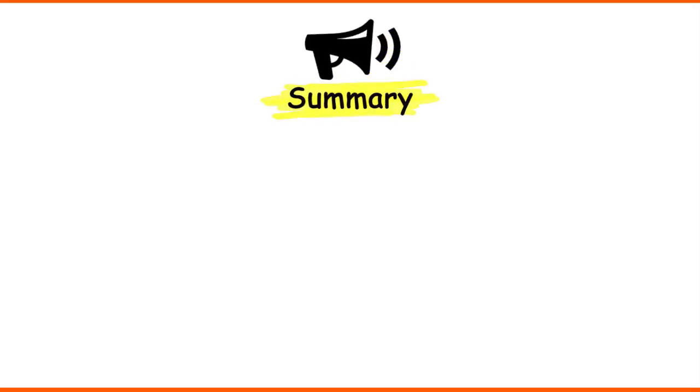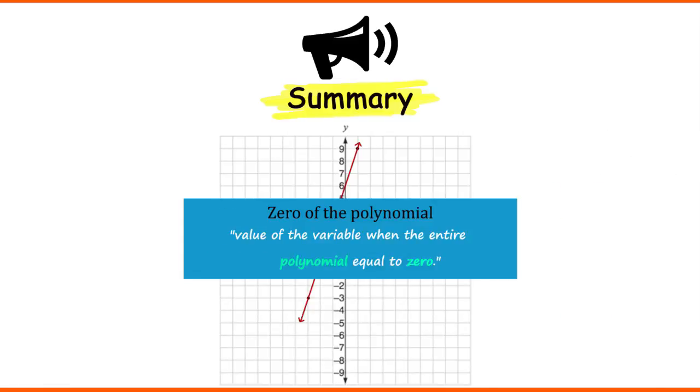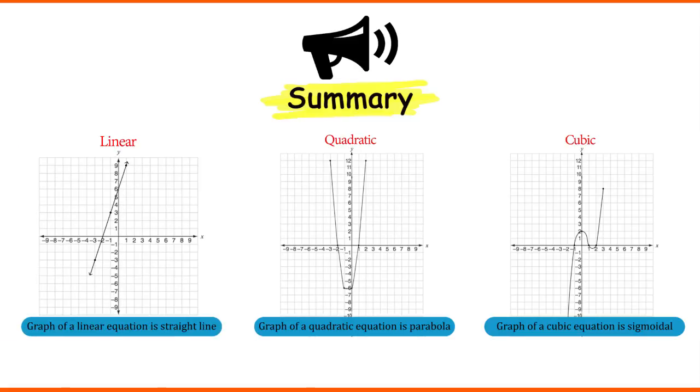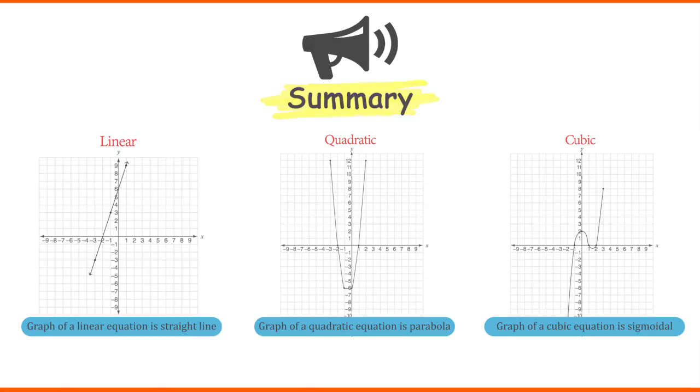Now, friends, we have learned about the types of polynomials, zeros of polynomials, and relation between zeros and coefficients of polynomials. Also, we have learned the graphical representation of zeros of polynomials. Now, let's see the division algorithm of polynomials.